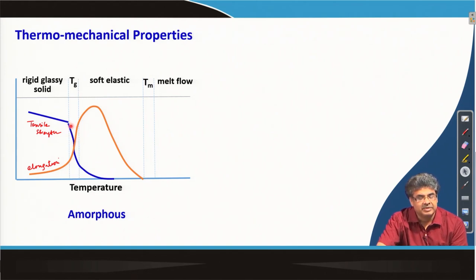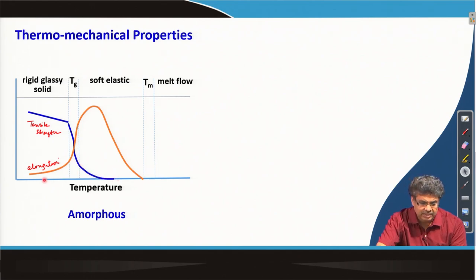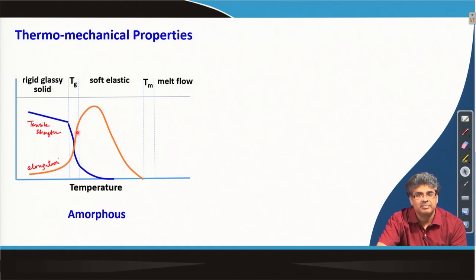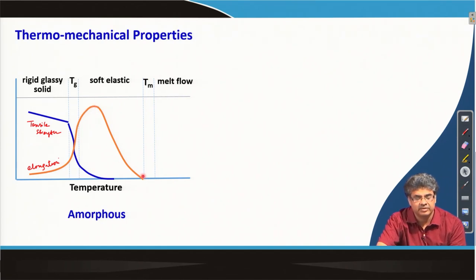In that temperature range, the tensile strength drops drastically and if it is purely amorphous, it becomes polymer melt. Whereas elongation slowly increases, but at the glass transition region, the elongation goes up before it peaks above a certain temperature and then again it drops.